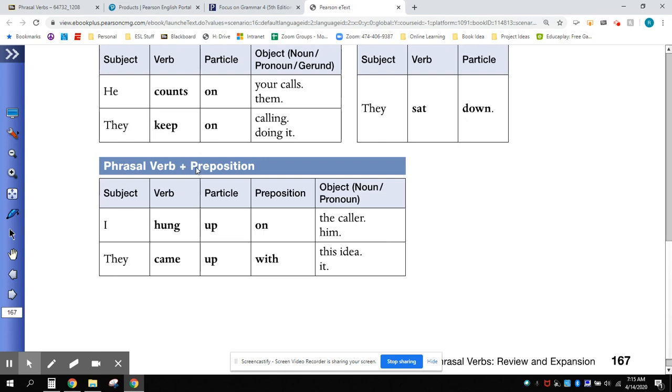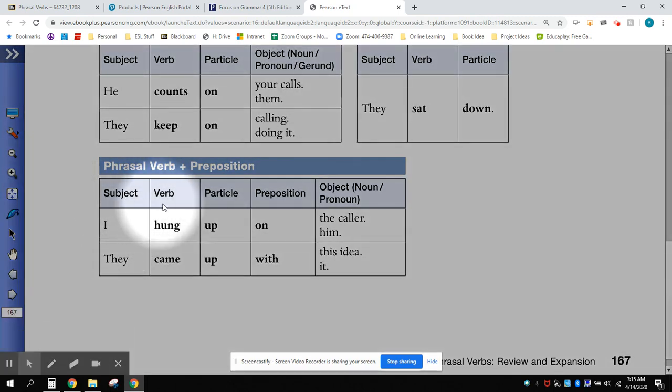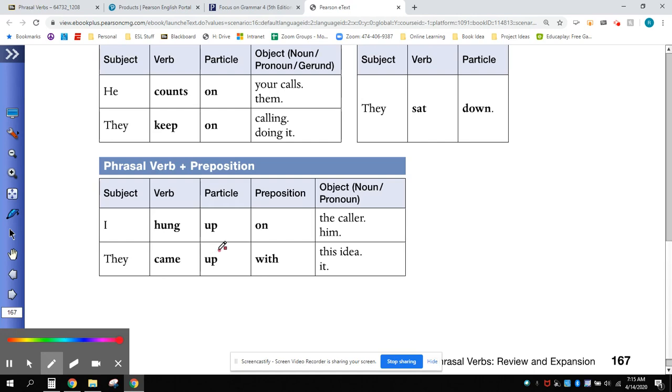As I mentioned, some phrasal verbs take a preposition. In these cases, you have a subject, a verb, a particle, which looks like a preposition, and then a preposition. Often, these prepositions should be learned with the verb and the particle as a group of words. Again, I recommend thinking of these as three-word verbs that should be learned as a phrase.